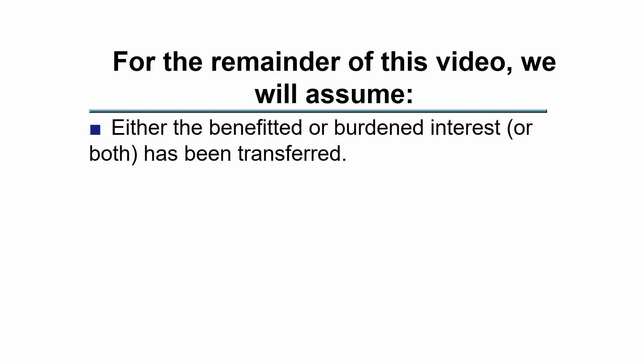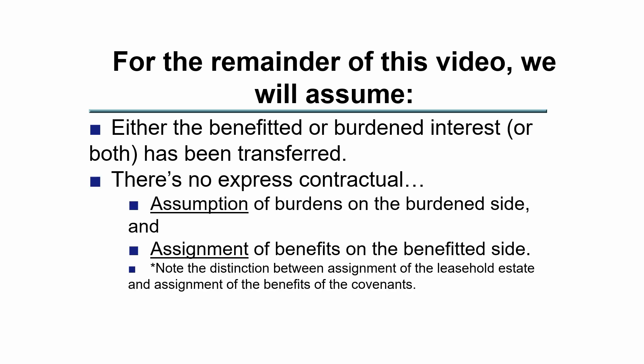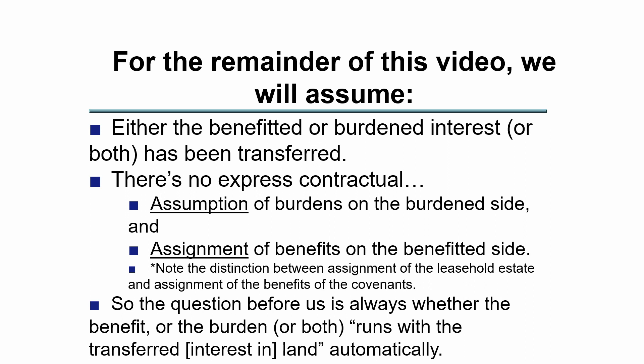For the remainder of this video, we'll assume that either the benefited or burdened interest — or possibly both — have been transferred. The landlord has sold the building transferring the rents and reversion interest, or the tenant has made an assignment or sublease transferring all or part of the leasehold estate. We also assume there is no express contractual assumption of burdens and no express assignment of benefits — those are separate from the transfer of the estate itself.